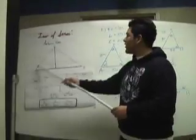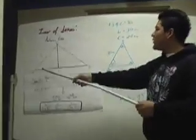As you can see here, we have a triangle that has sides A, B, C and angles A, B, and C.